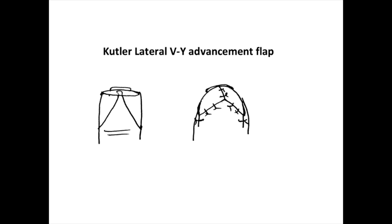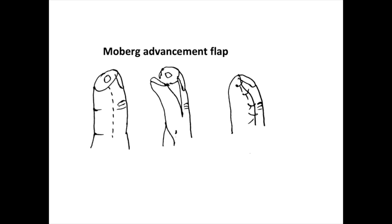The Moberg advancement flap is a type of advancement flap used for thumb tip defects. It gives a good sensate skin on the tip of the thumb, but has a small disadvantage in that there will be a minimal flexion deformity at the interphalangeal joint of the thumb.